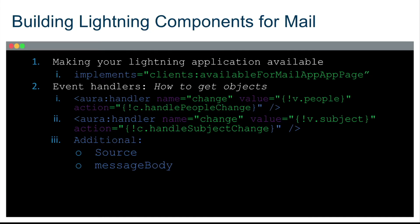So actually building components. The first thing you need to do is add the proper syntax to your component — something like 'clients available for mail.' Once you add this syntax to your component, it will now be visible in App Builder when you're dragging and dropping it into the email application layout. And then of course we need event handlers. There are some standard objects that Salesforce exposes: people, subject, message body, and all that kind of stuff. Like any event handler on change, we will have some kind of action that we define in our client-side controller to handle this data.